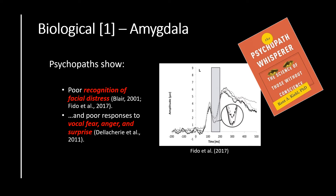Kent Kiehl used MRI — magnetic resonance imaging — which is a large magnet used to take detailed images of the brain. As such, we can demonstrate that psychopaths show deficits in the amygdala when responding to the emotions of others.